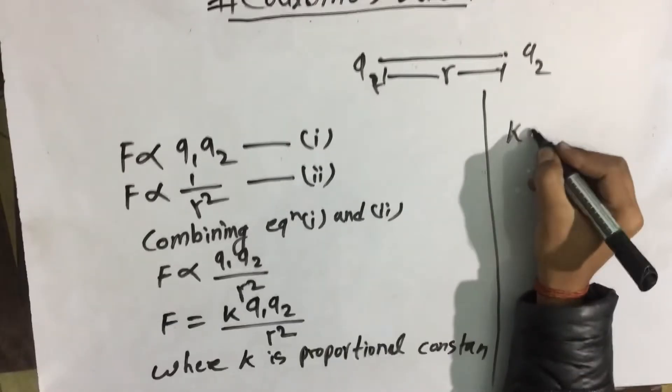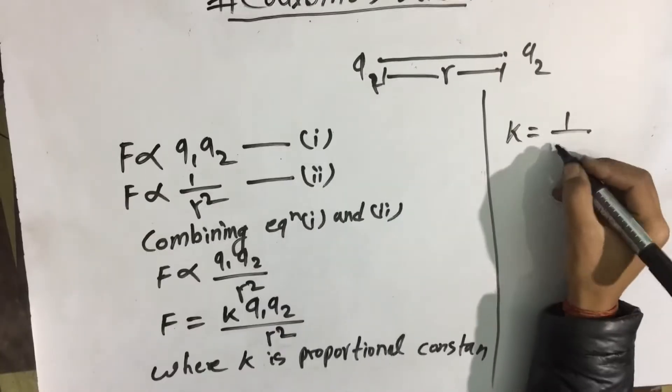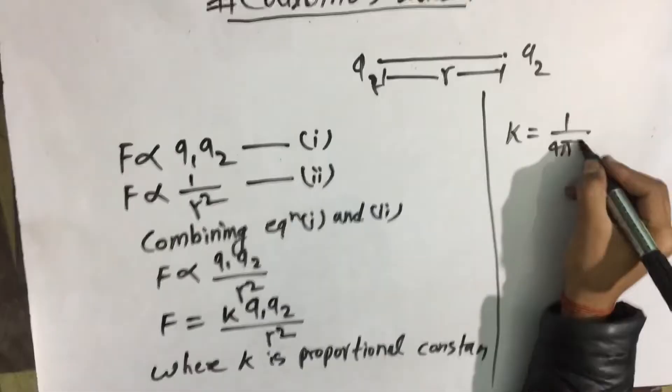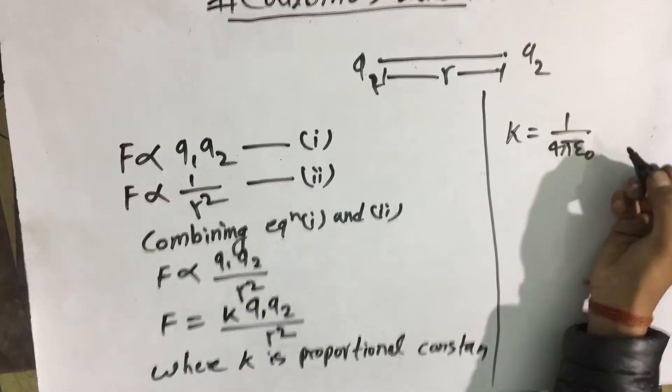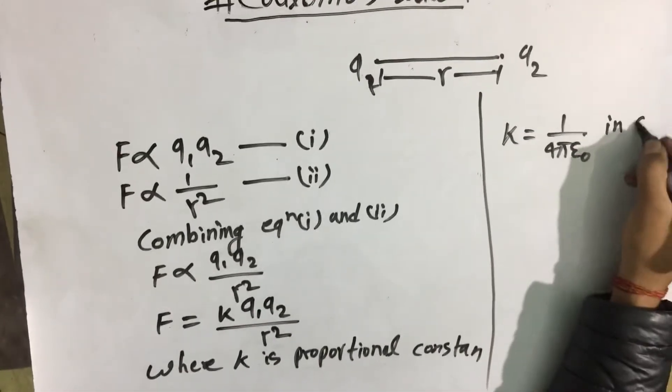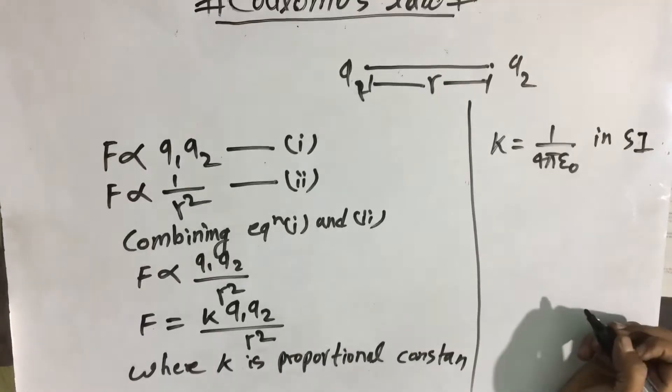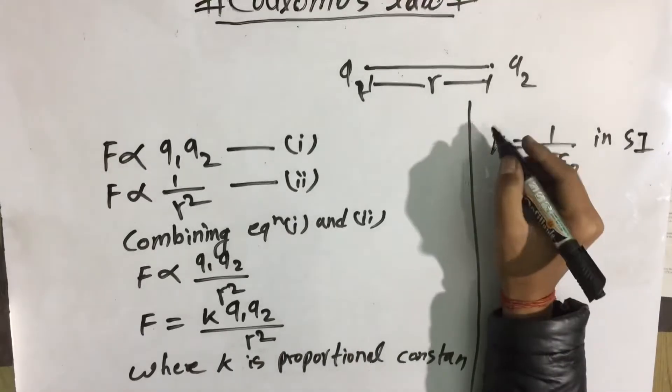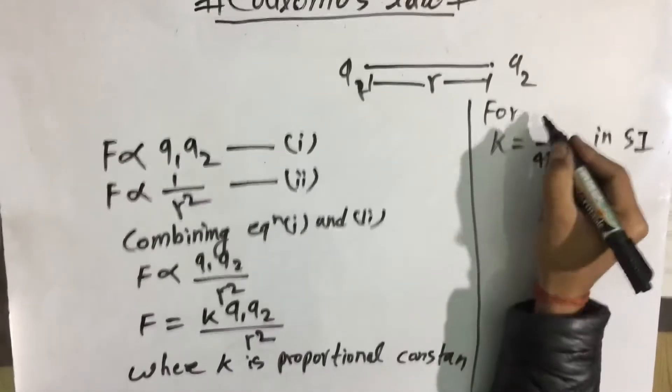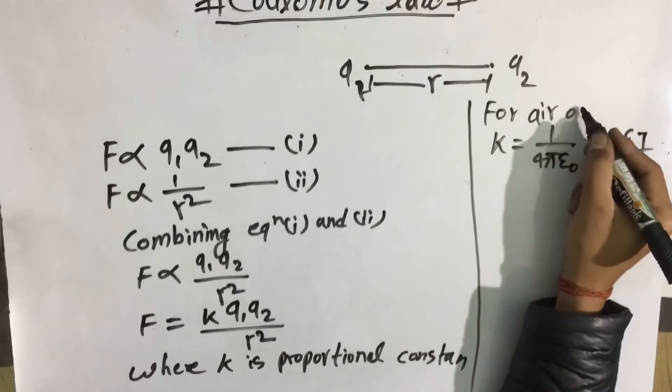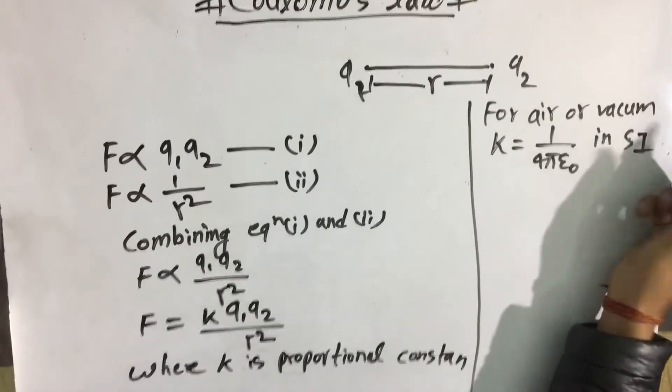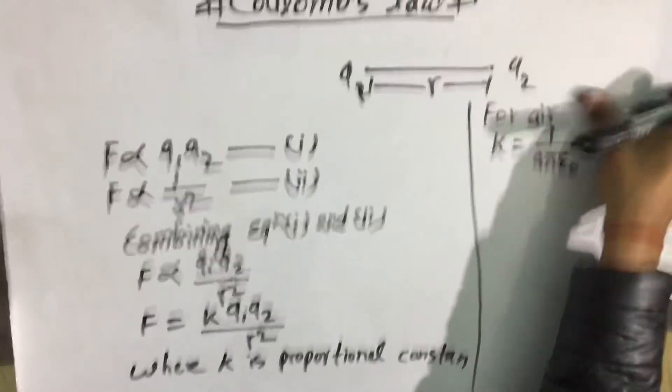K equals 1 by 4 pi epsilon naught in SI unit for air and vacuum.